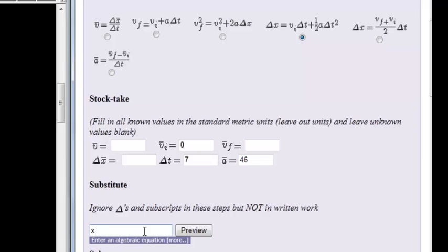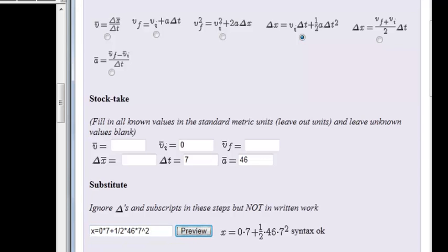Okay, so I'm just going to type in X is equal to initial velocity is zero times 7 plus a half is one over two times 46 times 7 squared. There we go we preview and that looks correct, doesn't it? Yes, it does.